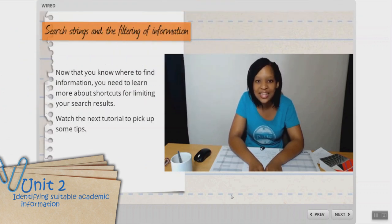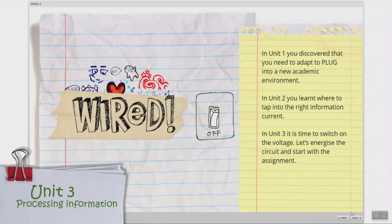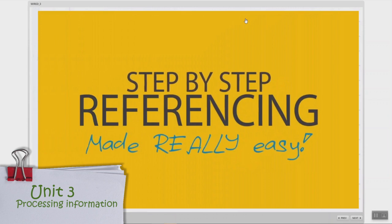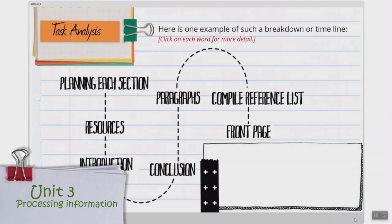Students are also exposed to sensibly evaluating and using different sources of information. In Unit 3, students have to process information. This unit focuses on paraphrasing, step-by-step referencing and the structure of an academic article.